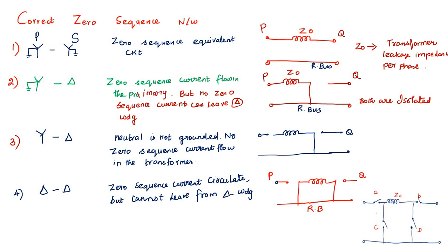In the general equivalent circuit, for case one where both sides are star grounded, A is closed and B is closed, while C and D are open. For case two, where primary is star grounded and secondary is delta, zero sequence current flows in the primary but no zero sequence current can leave from the star-delta winding. So A is closed, B is not closed, D is closed, and C is not closed.